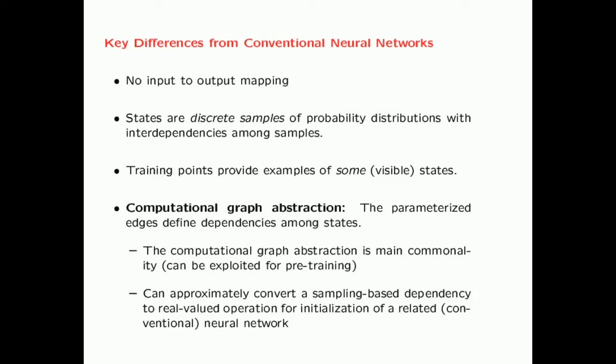There are some fundamental differences of the restricted Boltzmann machine from conventional neural networks. In a conventional neural network, we have an input-to-output mapping. However, in a restricted Boltzmann machine, we do not have this notion of input-to-output mapping. Rather, the states are discrete samples of probability distributions with interdependencies among the different states, meaning there is a graph of dependencies among the states.